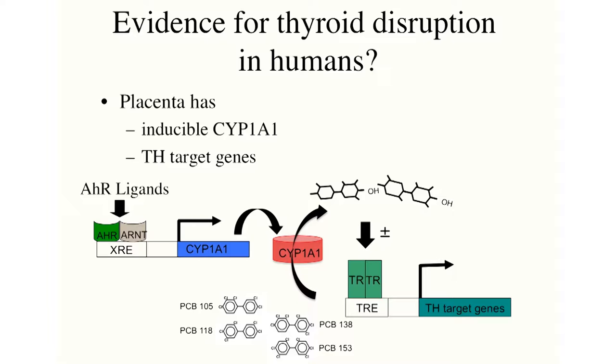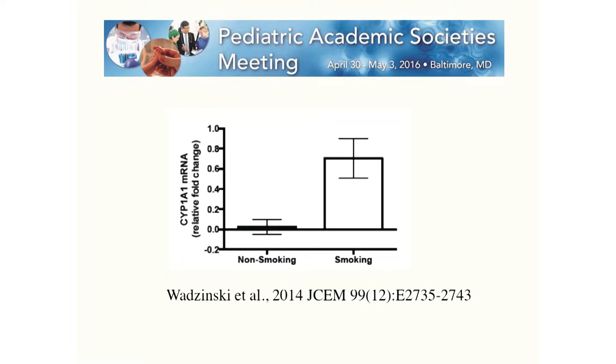We collaborated with Larissa Taker's group at the University of Sherbrooke to evaluate 164 placentas from a cohort study she had established. The first thing we found is that smoking increases CYP1A1 expression — other people have shown this and you can show it in vitro as well. We found a very strong correlation between CYP1A1 expression and two thyroid hormone response genes: placental lactogen and growth hormone variant. These two genes themselves are also tightly correlated with each other, suggesting a third independent regulator.